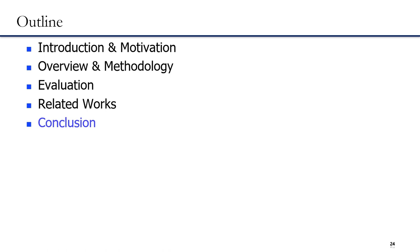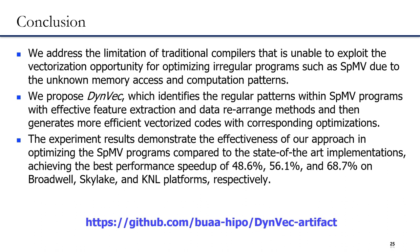In conclusion, we address the limitations of traditional compilers that are unable to exploit vectorization opportunities for optimizing irregular programs such as SPMV due to unknown memory access and computation patterns. We propose DEMV, which identifies regular patterns within SPMV programs with effective feature extraction and data rearrangement methods, and generates more efficient vectorized codes with corresponding optimizations. The experimental results demonstrate the effectiveness of our approach in optimizing SPMV compared to state-of-the-art implementations, achieving the best performance on most evaluated matrices across Broadwell, Skylake, and KNL platforms. DEMV is already open-source on GitHub. Thank you for listening.